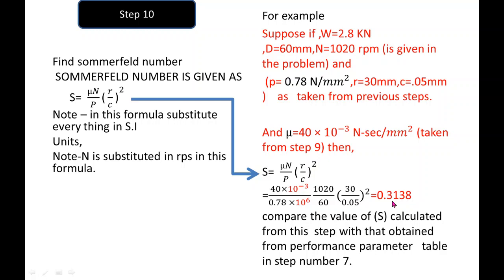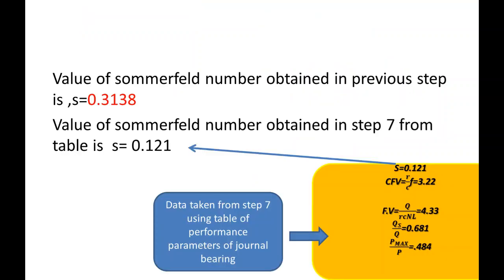Now we compare the Sommerfeld number from step 10 with that from step 7 from the table. Since the value from step 10 is 0.3138, which is greater than the value from step 7 which was 0.121, the design is safe. If the value from step 10 were smaller than from the table, the design would not be safe and we would go back to step 9, choose SAE 20 oil, find its viscosity at the average temperature, and recalculate the Sommerfeld number.